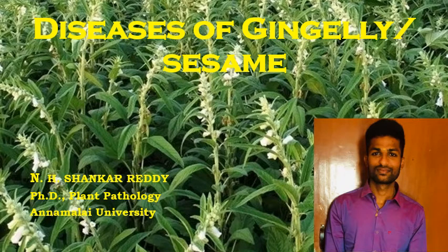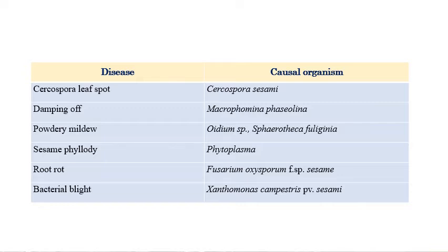Diseases of gingerly, or sesame as otherwise called, will be discussed now. The scientific name of gingerly or sesame is Sesamum indicum. My name is NH Shankar Reddy and I am doing PhD in plant pathology at Annamalai University. The important diseases in gingerly are: Cercospora leaf spot, caused by Cercospora sesamicola; damping off, caused by Macrophomina phaseolina; powdery mildew, caused by Oidium species or Sphaerotheca philogenia; sesam phyllody, a phytoplasmal disease; root rot, caused by Fusarium oxysporum f. sp. sesame; and bacterial blight, caused by Xanthomonas campestris pv. sesami.